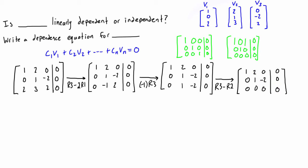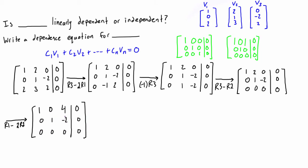Now we might be inclined to eliminate the remaining off-diagonal entry, but note that doing so will generate a non-zero number elsewhere. We can do row 1 minus 2 times row 2: 1 - 0 = 1, 1 - 2(0) = 1 — wait, 2 - 2(1) = 0, and 0 - 2(-2) = 4. The right-hand side: 0 - 2(0) = 0. The other rows are unaffected. We can see there is a free variable here.